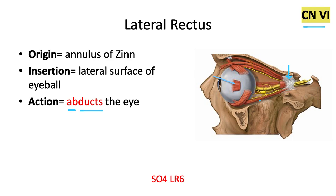The abducens nerve, cranial nerve 6, gets its name because the only muscle it innervates acts by abducting the eye. A helpful mnemonic is SO4LR6, which stands for superior oblique cranial nerve 4 and lateral rectus cranial nerve 6 — a useful tool to remember those two exceptions.